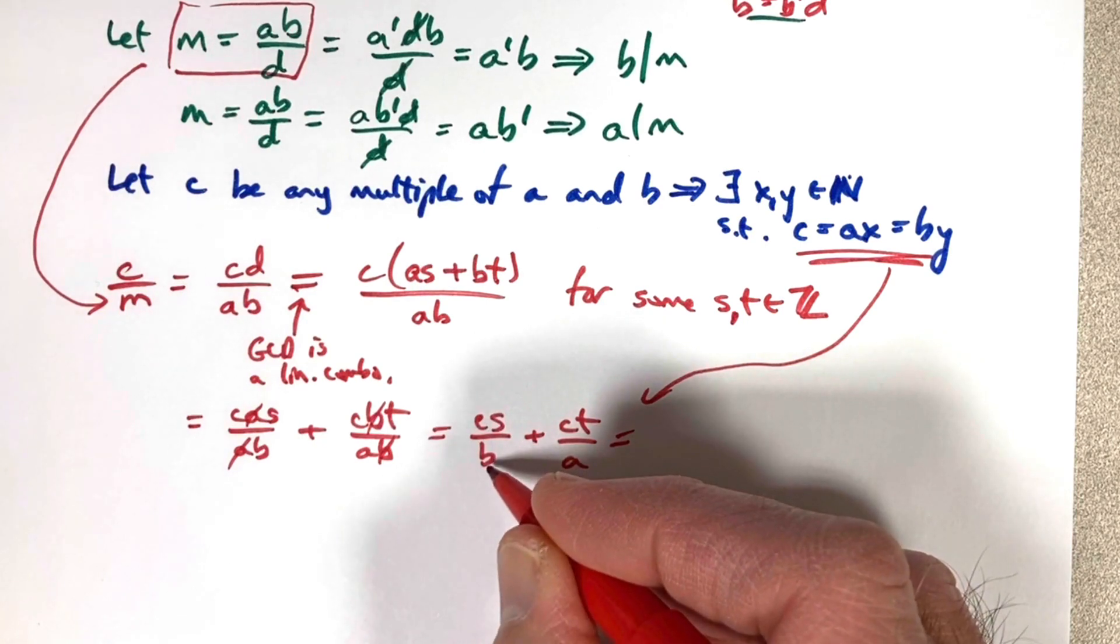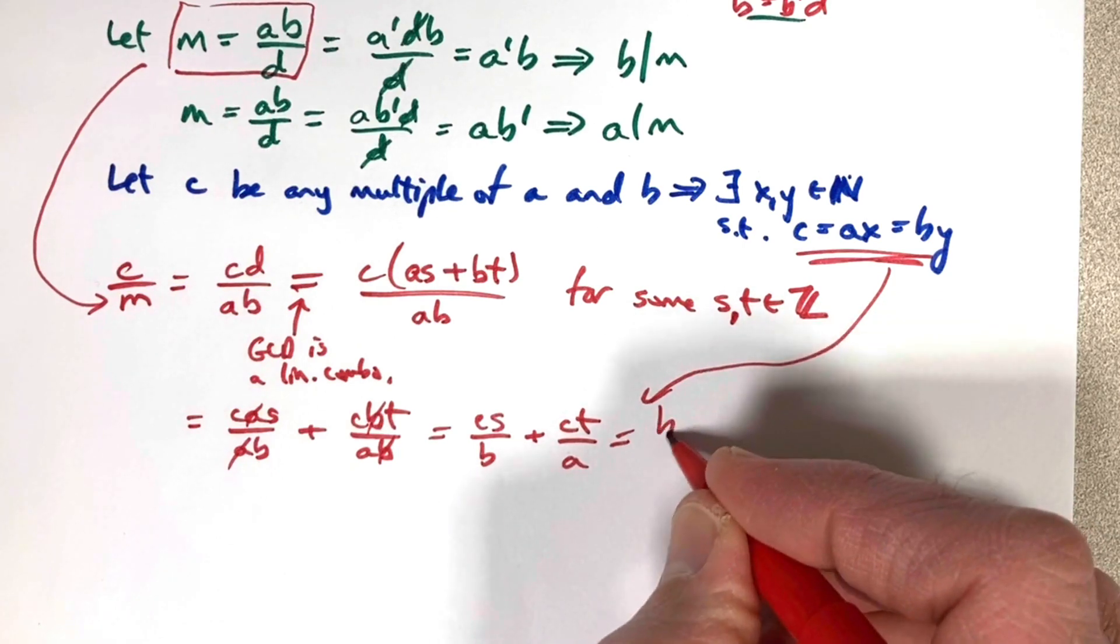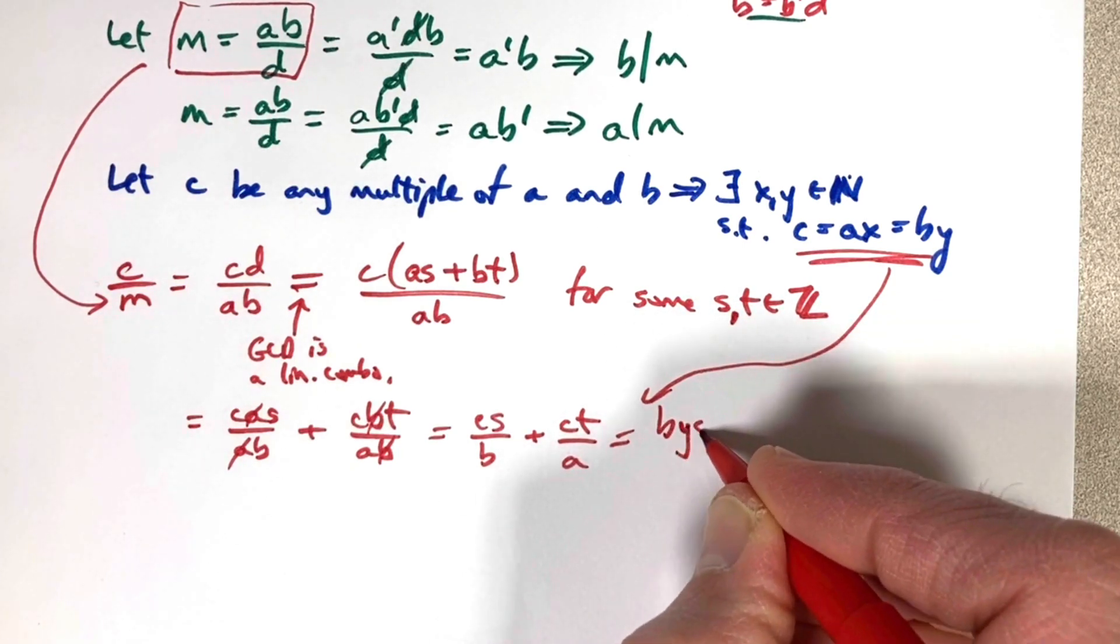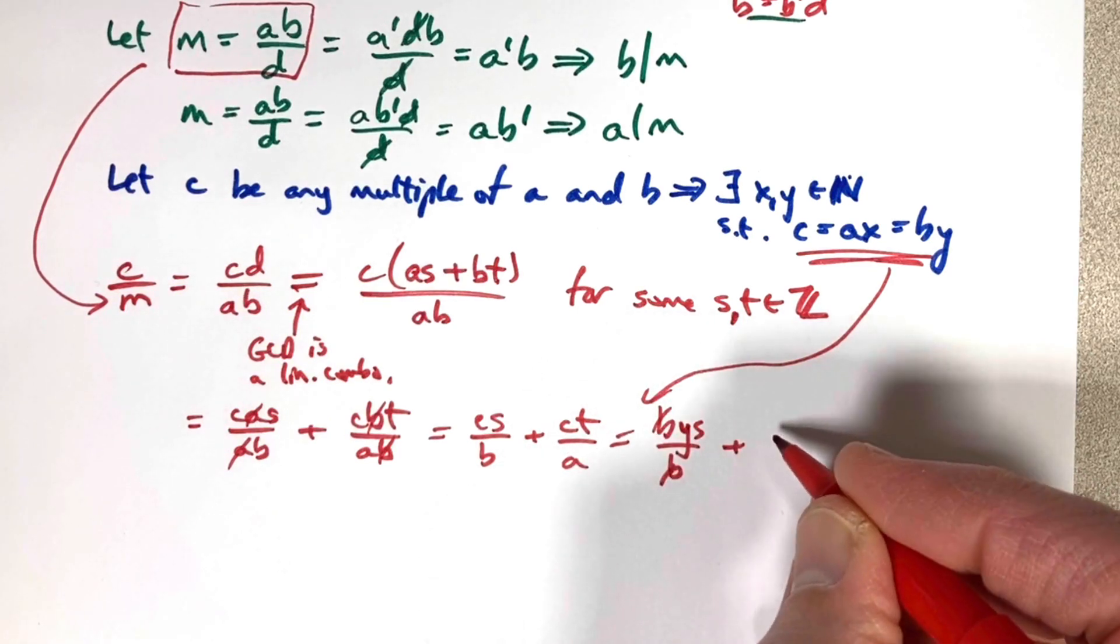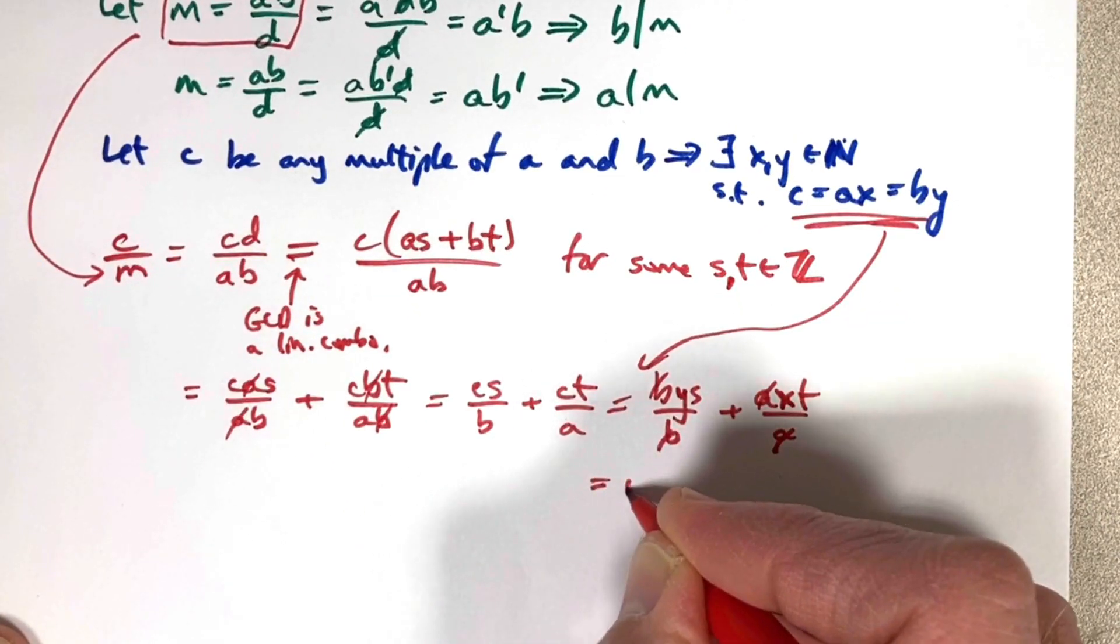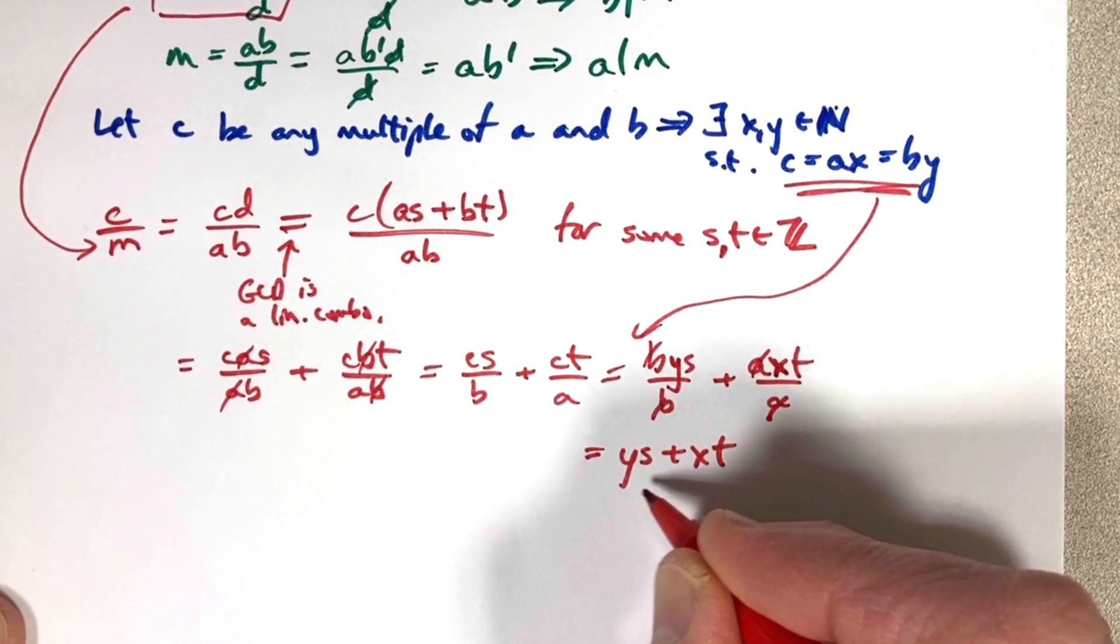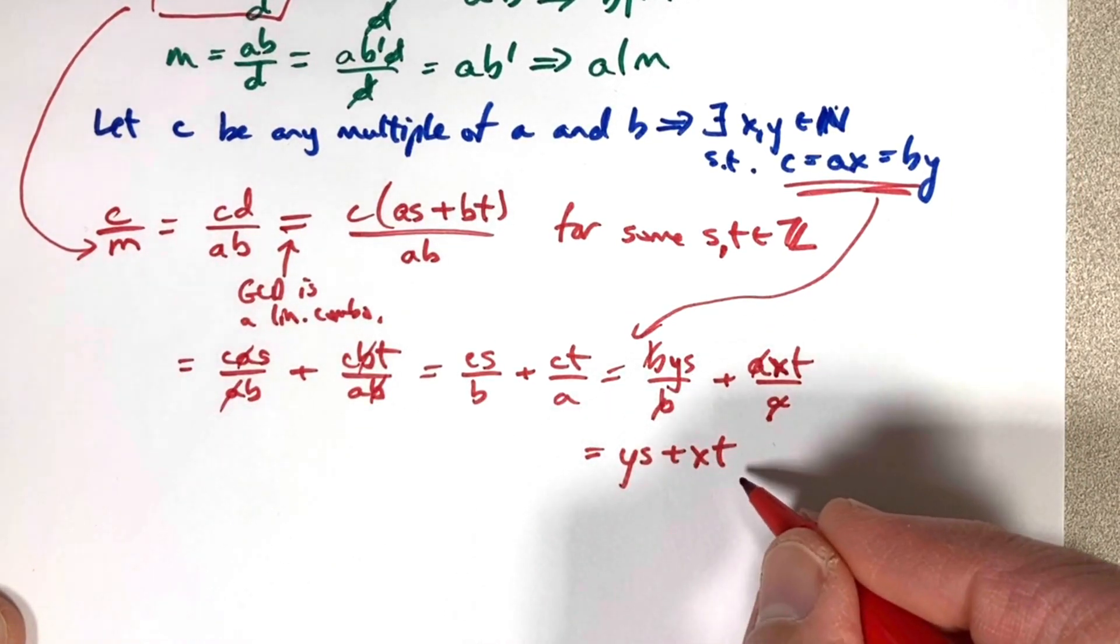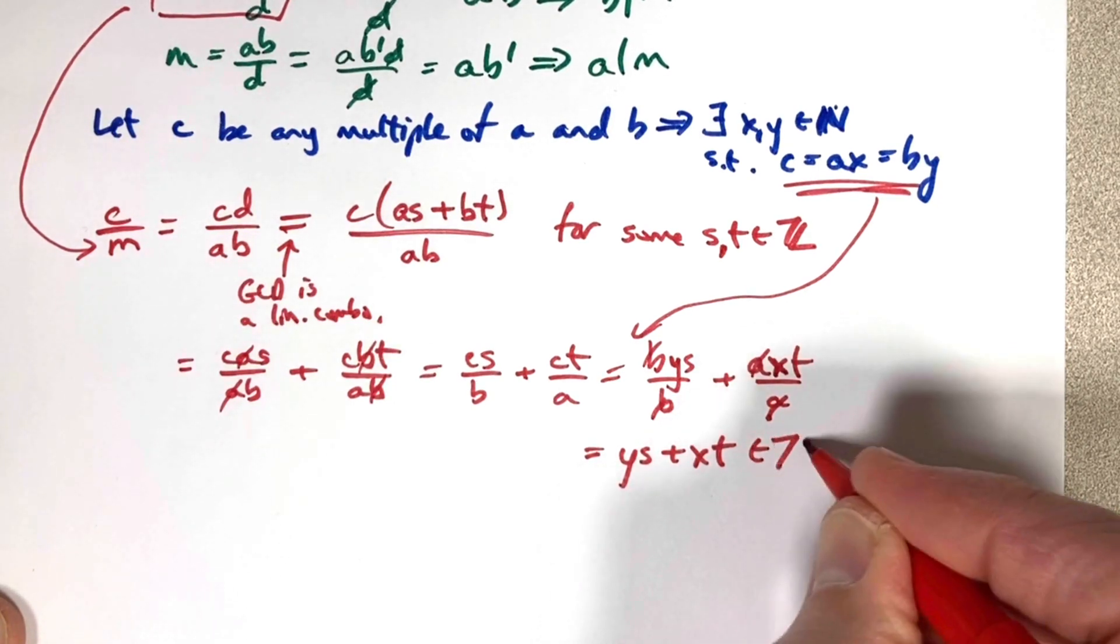We're trying to show this as an integer. We want to cancel the B here and cancel the A there. In this fraction, replace C with B times Y. So we get BYS over B. We can cancel the B's. In the other fraction, replace C with A times X. We get AXT over A. We can cancel the A's. We're left with YS plus XT. All those quantities, YS, X, and T, are all integers. This is indeed an integer.